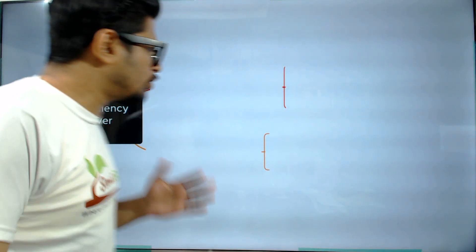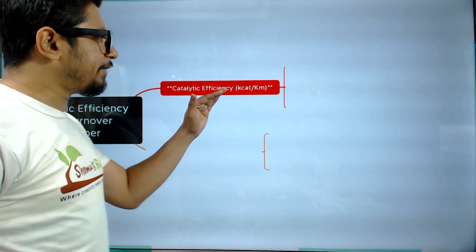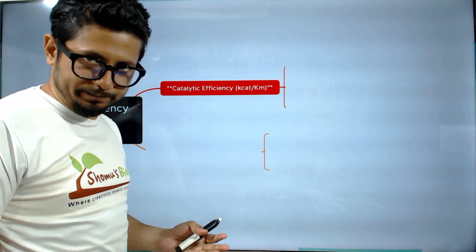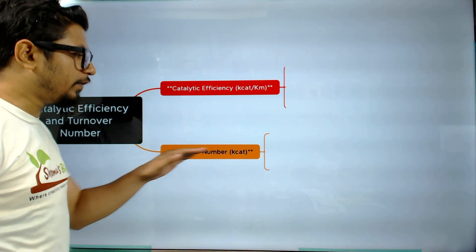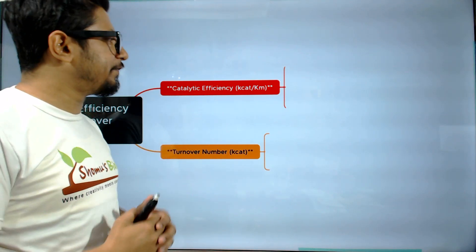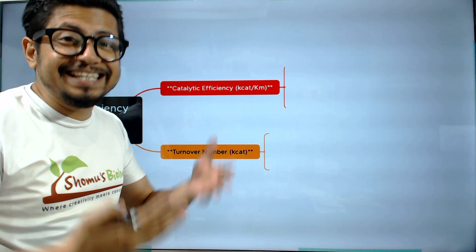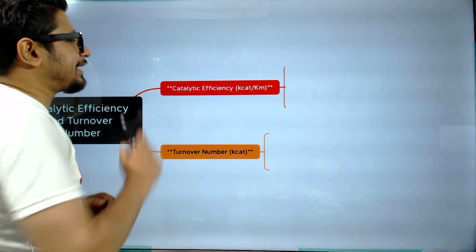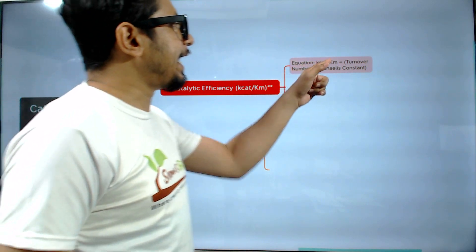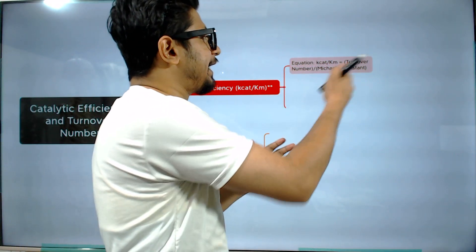Catalytic efficiency is denoted as kcat divided by Km, and turnover number is denoted as kcat. In simple terms, catalytic efficiency equals turnover number divided by Km. So the equation is: catalytic efficiency = kcat / Km, where kcat is the turnover number and Km is the Michaelis constant.